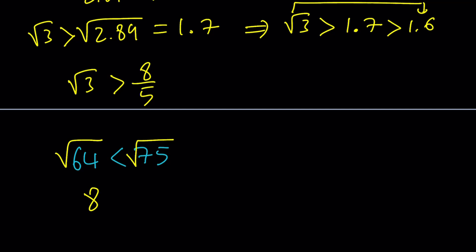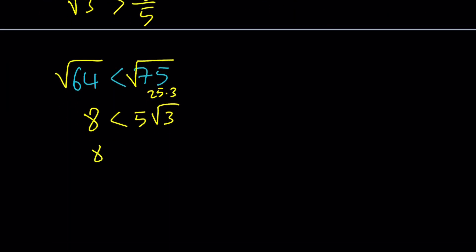And square root of 64 is 8. And 75 can be broken down into 25 times 3. So, we can write it as 5 root 3. Awesome. If you divide both sides by 5, what are you going to get?